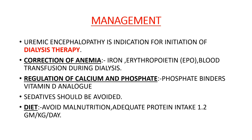How to manage a case of uremic encephalopathy? Uremic encephalopathy is a clear-cut indication for initiation of dialysis — dialysis is urgent in this case. We correct anemia with oral or injectable iron and give erythropoietin (EPO) 4000 or 10,000 units as per requirement. Blood transfusion may be given for severe anemia, but it should be done during dialysis to avoid fluid overload. We regulate calcium and phosphorus with phosphate binders or vitamin D analogs. We must avoid sedatives as they may worsen drowsiness and altered sensorium. For diet, we promote adequate nutrition with higher protein intake of 1.2 gram per kg per day. The most important therapy is urgent dialysis.